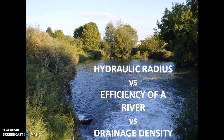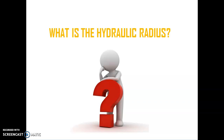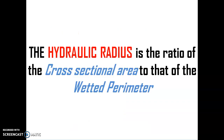First and foremost we have to ask ourselves: what is the hydraulic radius? We will have a diagrammatic view to give us a proper understanding of what it looks like. In terms of our definition, the hydraulic radius is a ratio of the cross-sectional area to that of the wetted perimeter.